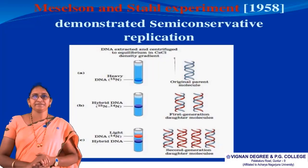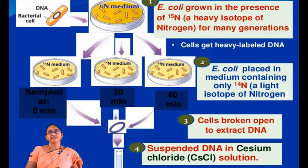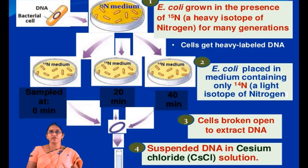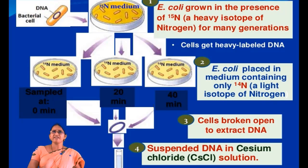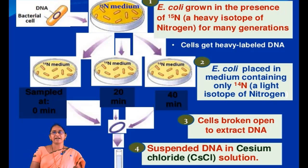They began an experiment with the bacterium Escherichia coli and allowed it to grow in a nutrient medium containing the heavy isotope nitrogen-15. The difference between the heavy isotope and the light isotope is the number of neutrons in the nucleus. The bacterium was grown in the heavy nitrogen-15 medium for several generations until the whole bacterial genome was converted to heavily labelled nitrogen. During growth, nitrogen is taken up by the bacterium and used to synthesize biomolecules including DNA.